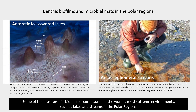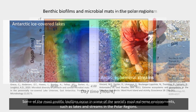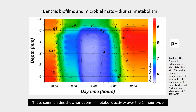Some of the most prolific biofilms occur in some of the world's most extreme environments, such as lakes and streams in the polar regions. These mat communities show variations in metabolic activity over the 24-hour cycle, as illustrated by diurnal changes in pH in the microbial mat of a geothermal spring.